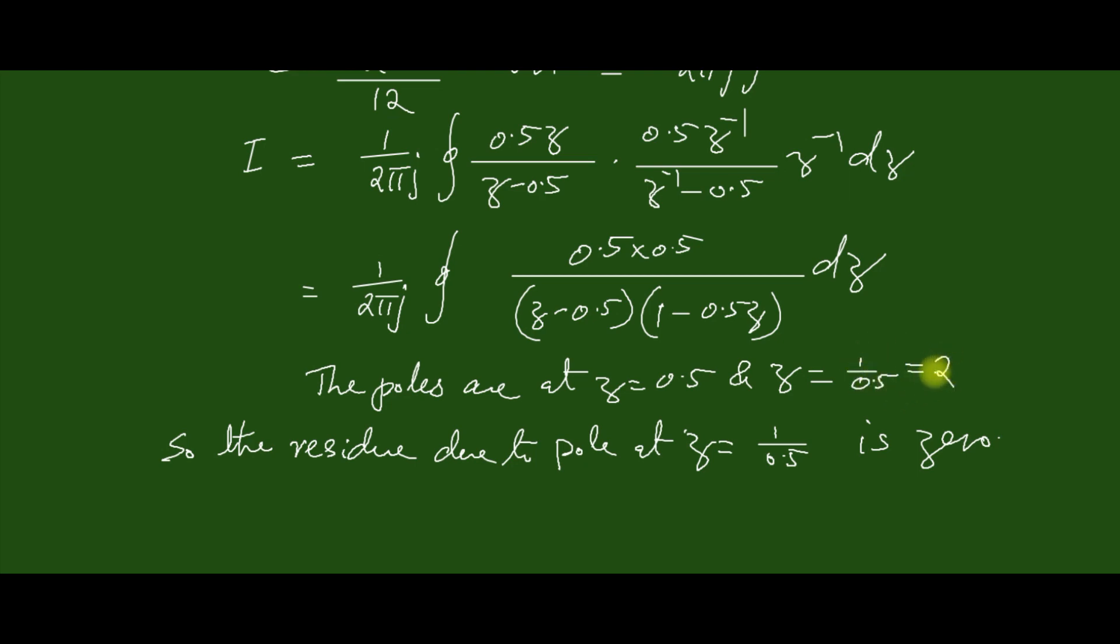Since we can see that it is greater than 1, this pole at z=2 is outside the unit circle, so the residue due to this pole will be 0.